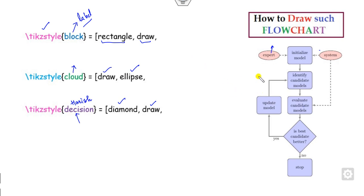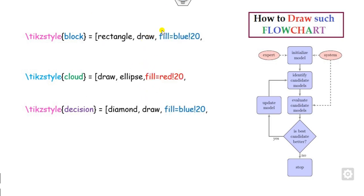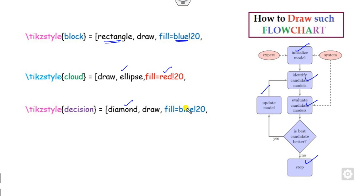Once you have defined the shapes, you can see that these are my blue color and these are my red color, and so on. You can define the coloring here like this, so that all the rectangle colors are blue. Note that rectangles 4 and 5 are not exactly blue but only 20 percent blue. Similarly for the ellipse side, you can see these are the red color, while for the diamond this is my blue color.